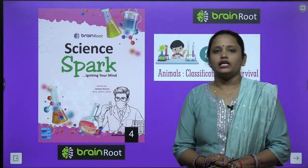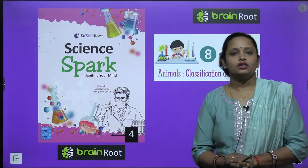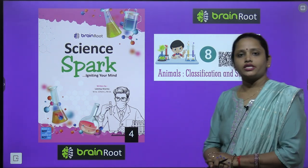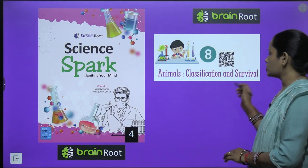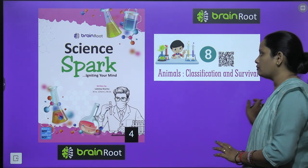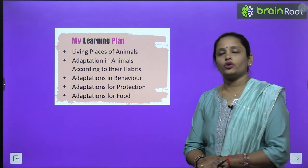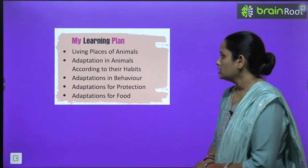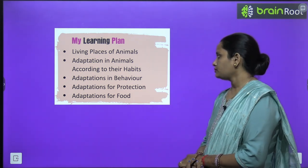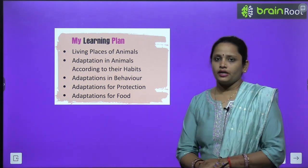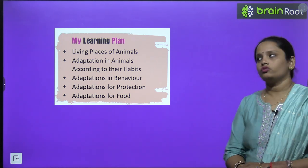Hello kids, welcome back. I am Vandera and we are learning science of class 4 by Brain Root series. Here is a book called Science Spark. Today we are going to start with chapter number 8, named Animals Classification and Survival. We will learn about animals, how they are classified and how they survive. The topics include living place of animals, adaptation in animals according to their habitats, adaptation in behavior, adaptation for protection, and adaptation for food.